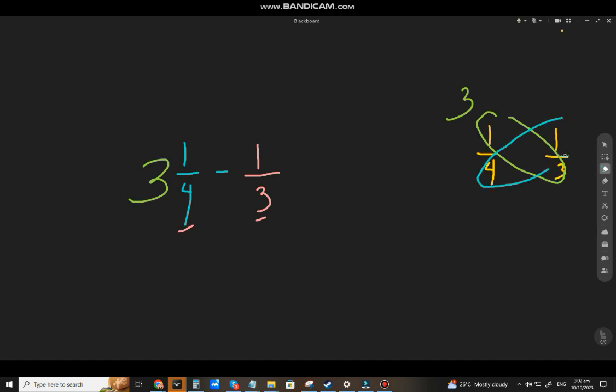And this one is 1 times 4, that will be 4. So, 1 third is higher than 1 fourth. So, the dissimilar one is higher than 1 fourth. Okay?